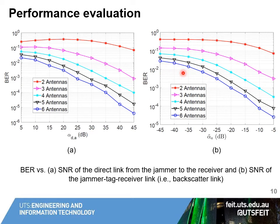In both cases, a higher number of antennas at the receiver leads to better communication performance. From these two figures we can observe that the more power the jammer uses to attack the channel, the lower the bit error rate we can achieve and the more data the tag can backscatter to the receiver.